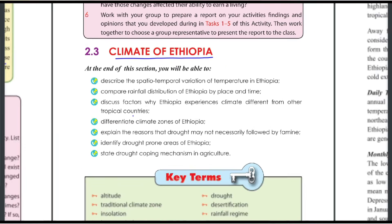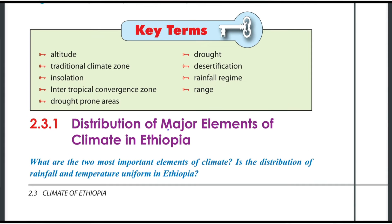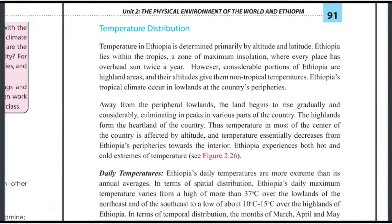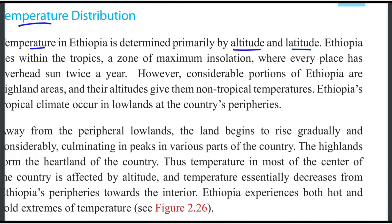The climate of Ethiopia is the distribution of major elements of the climate in Ethiopia. The climate of Ethiopia is determined primarily by altitude and latitude.